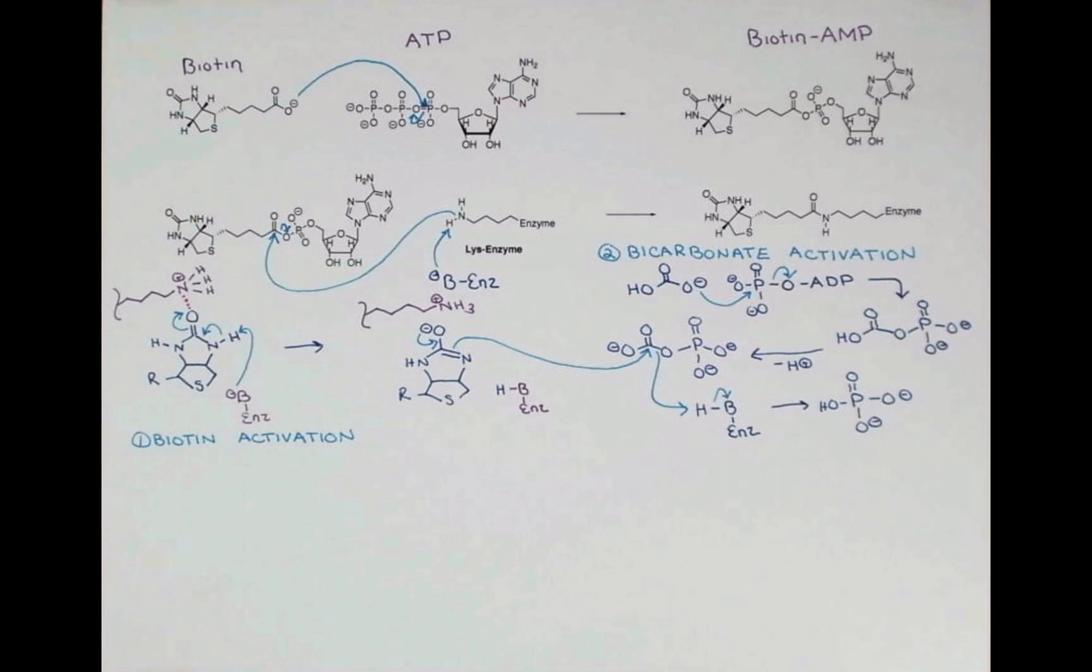We still need to link up these two pieces of the molecule, so I'll redraw that down here and we'll continue on with our third step, which will be the transfer of CO2 to a substrate. In gluconeogenesis, biotin transfers a carboxyl group to pyruvate to form oxaloacetate. So let's look at this step of gluconeogenesis.